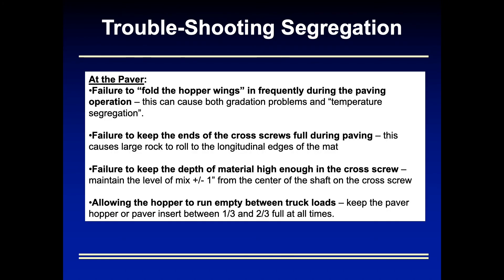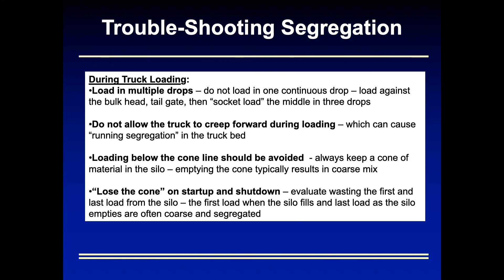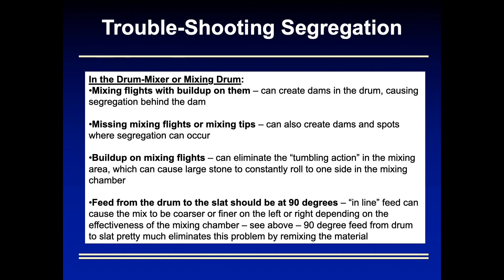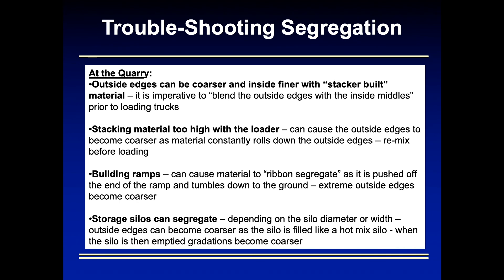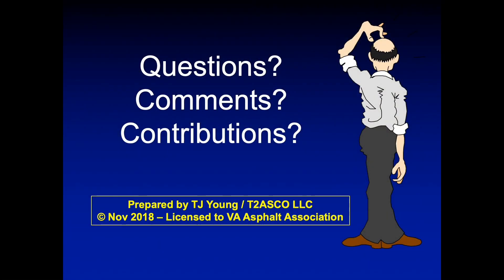At the end of your handout, pages 17 and 18 list segregation sources to check: at the paver, during truck loading, at the batcher, at the slack conveyor, in the drum mixer, at the feed bins, in the stockpiles, or all the way back at the quarry. Just chase it backwards — where the problem stops is where your problem area is. I hope this has been useful to you. I appreciate the chance to be part of this class.